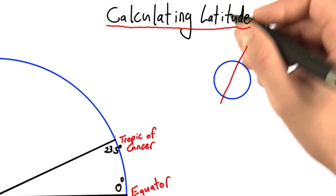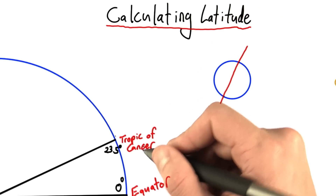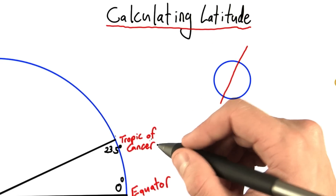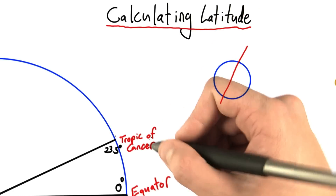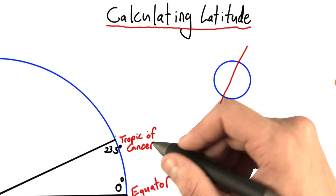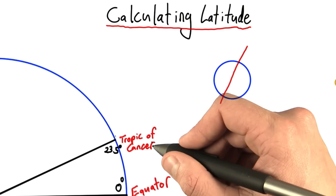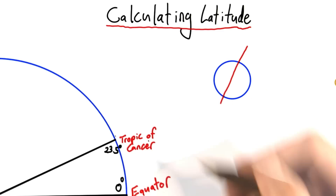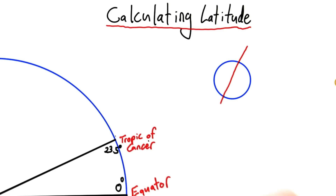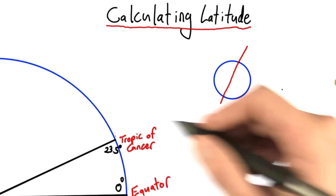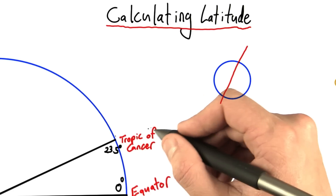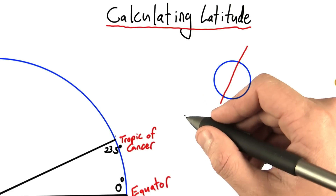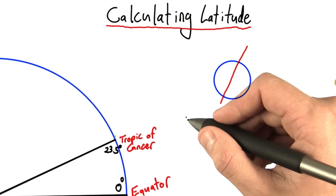So, in unit one, we talked about the Tropic of Cancer, though I'm not sure if we actually used that word. The city of Siena, where Eratosthenes saw the sun shining vertically down a well, was located in the Tropic of Cancer. The sun isn't always directly above the Tropic of Cancer, as it happened to be on the summer solstice.